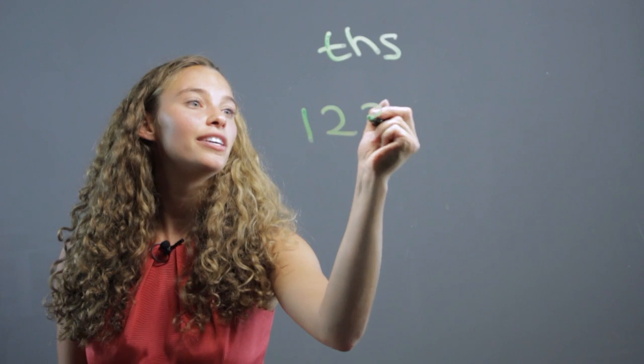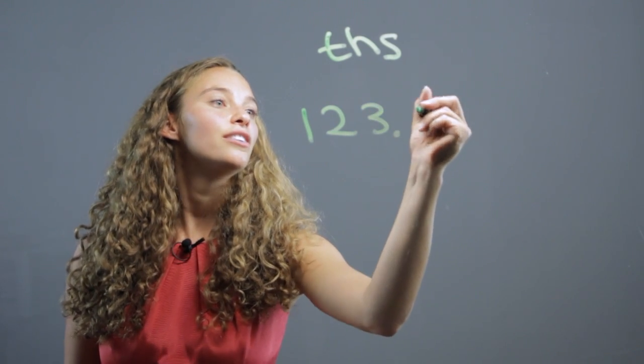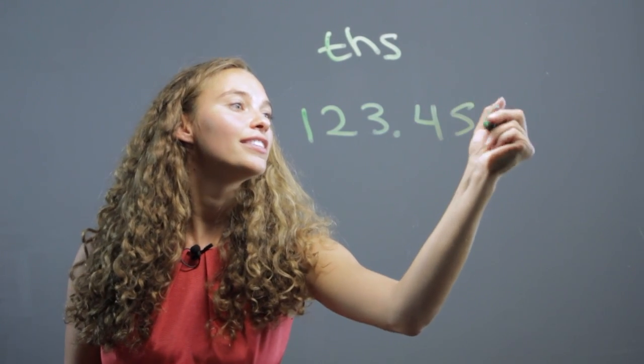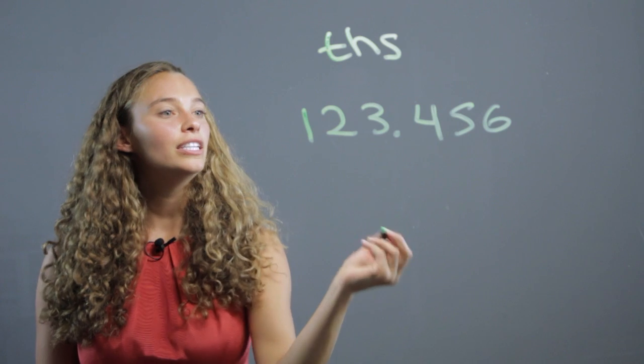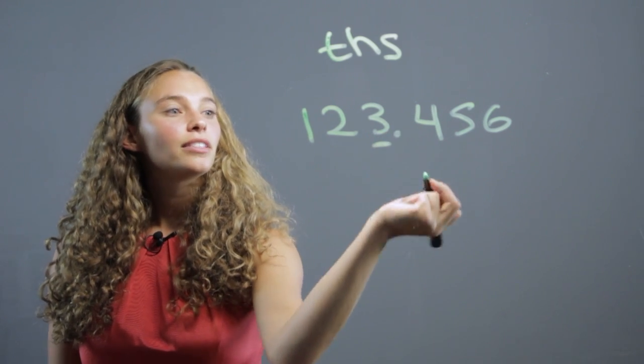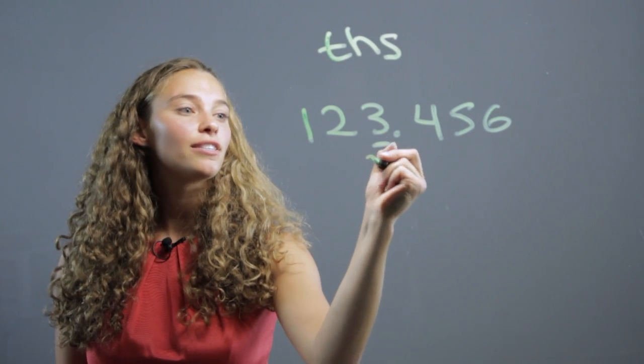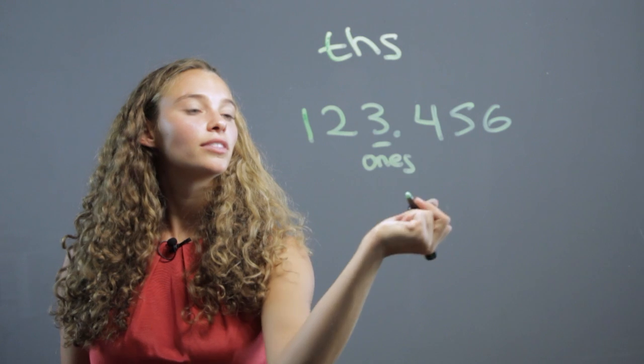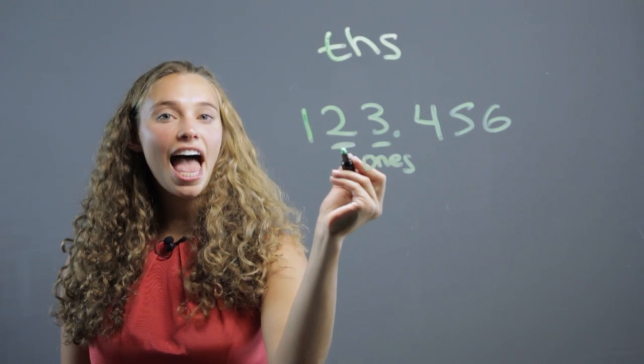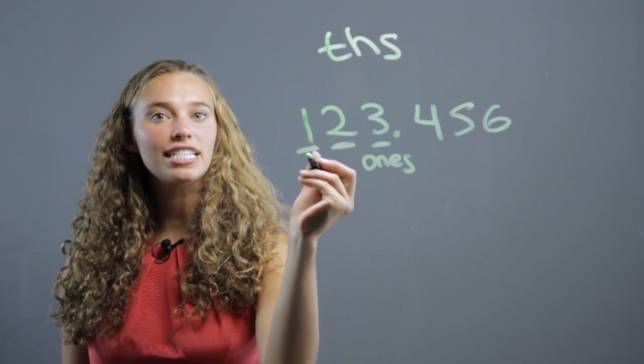Let's look at the number one, two, three, point, four, five, six. The three before the decimal is ones, the two is the tens, and the one is the hundreds.